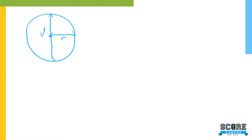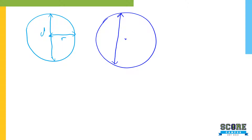Let me show you what is not a radius and what is not a diameter. The center is here — is this a diameter? It is not the diameter. This is not the radius either. Why? Because it doesn't pass through the center. The diameter and the radius must pass through the center, and must touch the circumference — the outline of the circle.